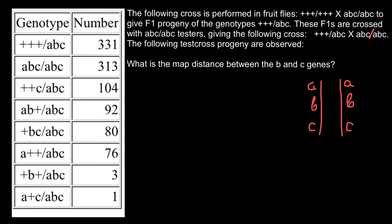This is the genotype of one parent, and here is the genotype of another parent. On one chromosome we have plus, plus, and plus, and on the other chromosome we have small a, small b, and small c. We call this a test cross because using it we can find the distance between the genes and the order of the genes.